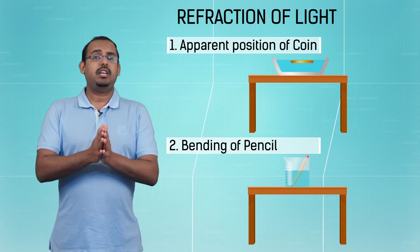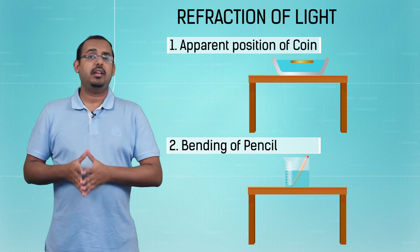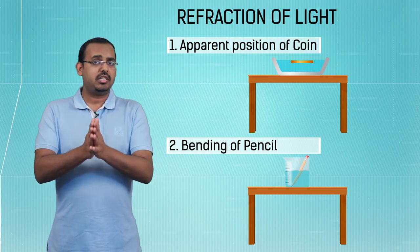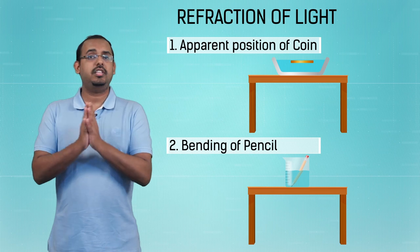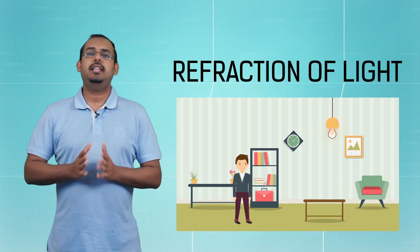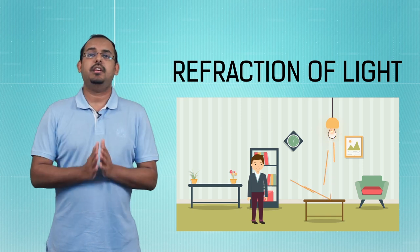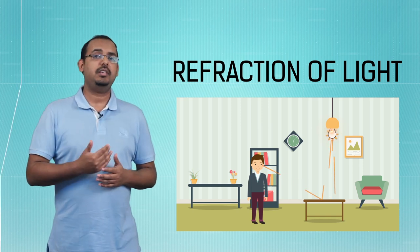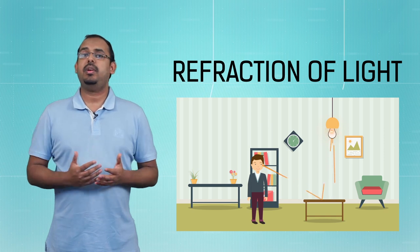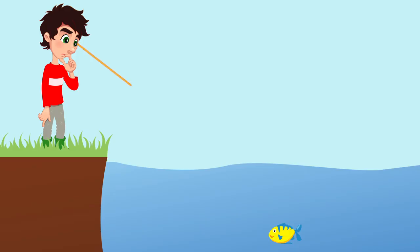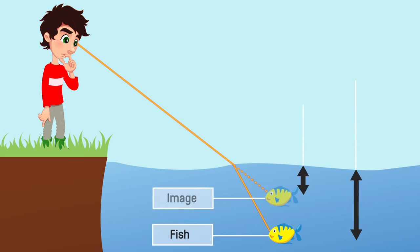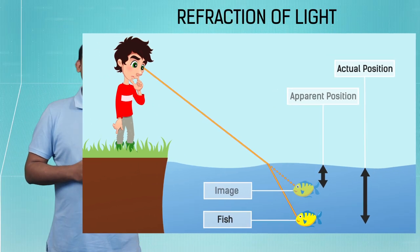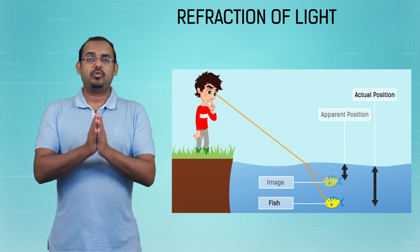So whenever light coming from an object bends from its path or deviates from its path due to some reason, that changes our perception of the position or the shape of that particular object. We have studied in the chapter of reflection of light that we can see all the objects around us when light reflects from these surfaces and reaches our eyes. So if the light coming from these objects actually bends out of its path, we will see these objects as if of distorted shape or as if they are away from their original position. This bending of light is what is called as the refraction of light.